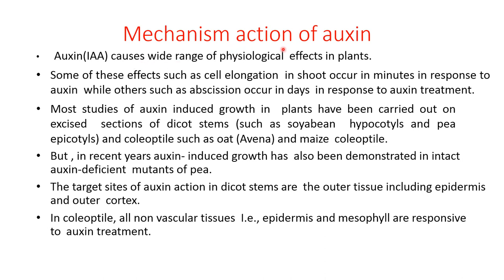Mechanism of action of auxin. Auxin causes a wide range of physiological effects in plants. Some effects such as cell elongation in shoots occur in minutes in response to auxin, while others such as abscission occur in days in response to auxin treatment. Most studies on auxin-induced growth have been carried out in excised sections of dicot stems such as soybean hypocotyl and pea epicotyl, and coleoptiles such as oat and maize. The target site of auxin action in dicot stems are the outer tissues including epidermis and outer cortex. In coleoptiles, all non-vascular tissue — epidermis and mesophyll — are responsive to auxin treatment.